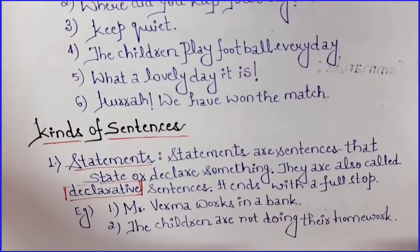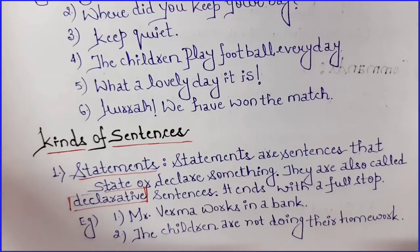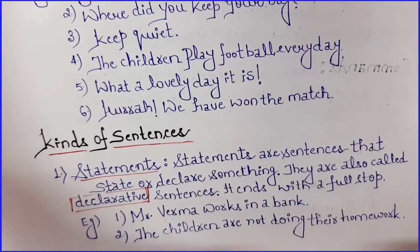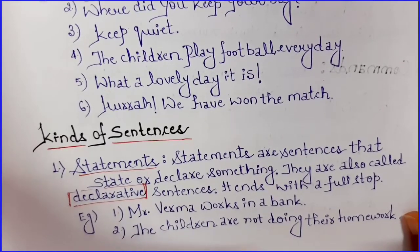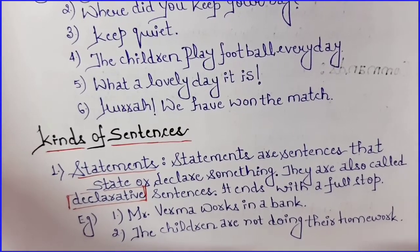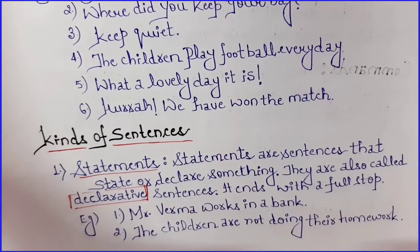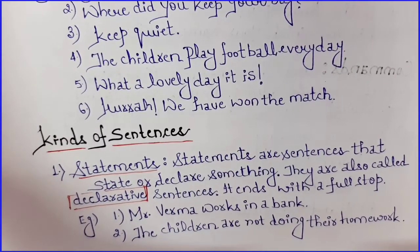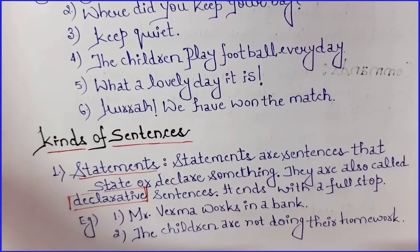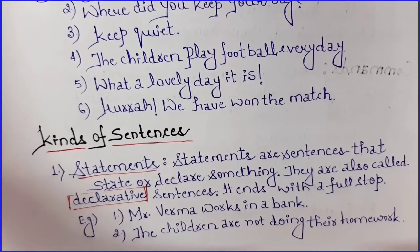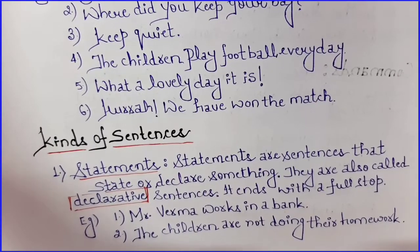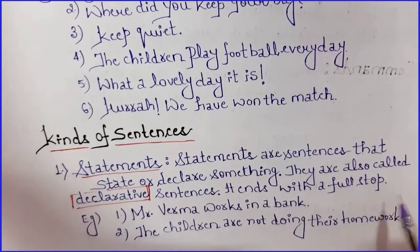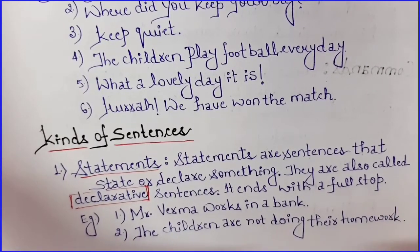The first kind of sentence is the statement. Statements are sentences that state or declare something. They are also called declarative sentences because they declare something. These types of sentences end with a full stop — jabhi baat khatam ho jaati hai, toh they end with a full stop.